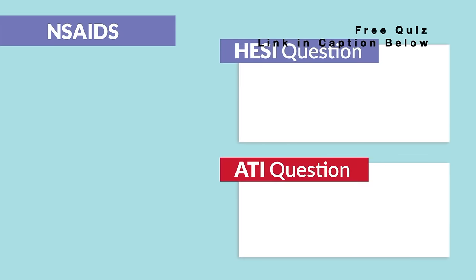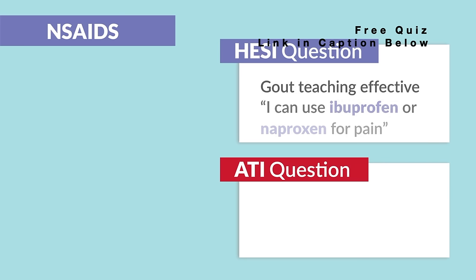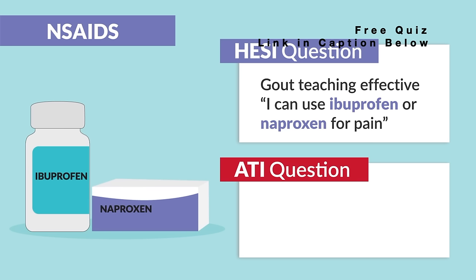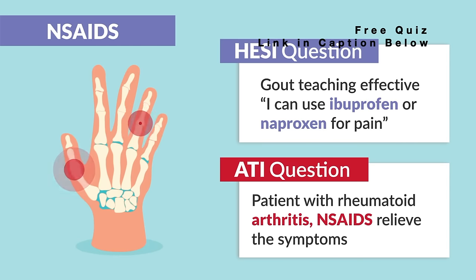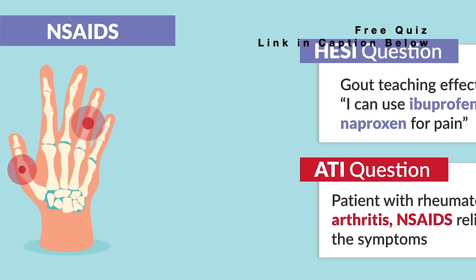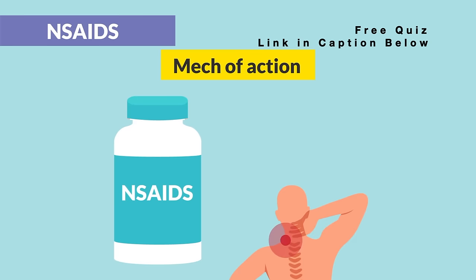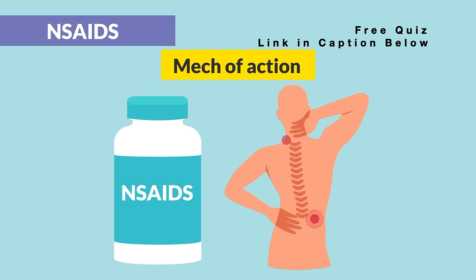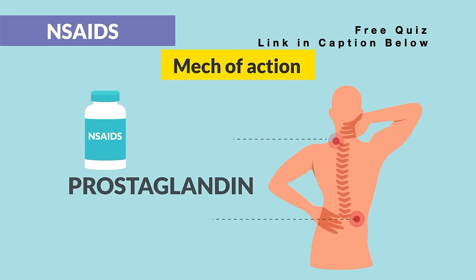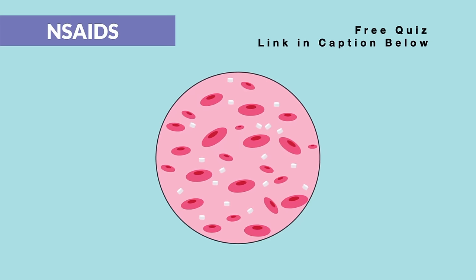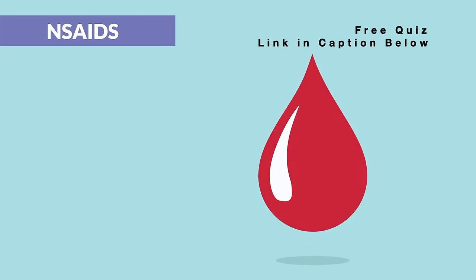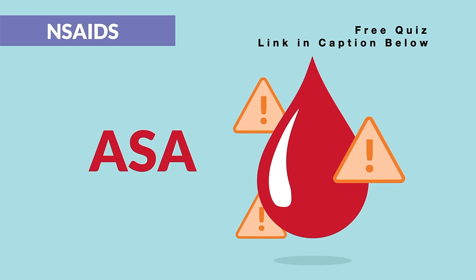A common HESI and ATI question usually goes something like: 'Gout teaching has been effective when a patient states, I can use ibuprofen or naproxen for pain' — yes, because gout and arthritis usually indicate inflammation. NSAIDs relieve those symptoms. As for the mechanism of action, NSAIDs decrease the prostaglandin response — think of prostaglandins as a big party popper that puffs up the body and contributes to inflammation. They also decrease platelet aggregation, especially with aspirin, which leads to a big risk for bleeds.